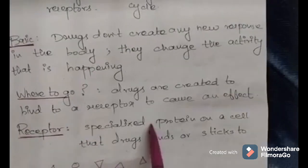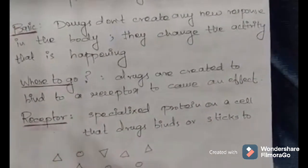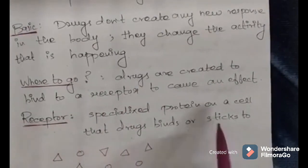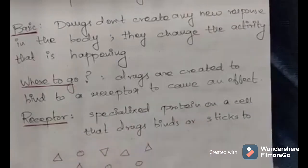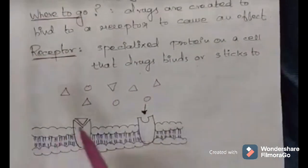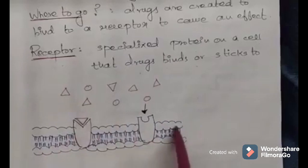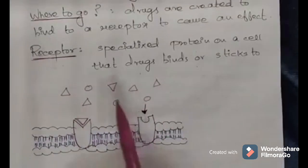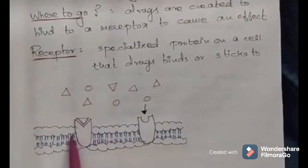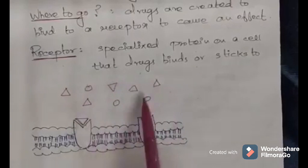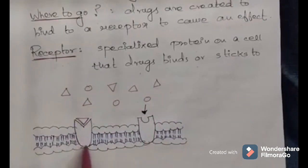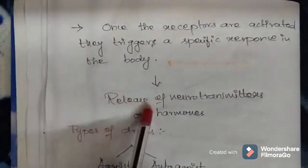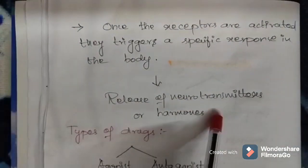So what is a receptor? A receptor is a specialized protein located on a cell that the drug binds to or sticks to. As you can see in this picture, the receptors are located on top of the cell, to which the drug particles come and bind. A particular type of drug binds to a particular type of receptor — not all drug particles can bind to any given receptor. Once the receptors are activated, they trigger a specific response in the body, like release of neurotransmitters or hormones.